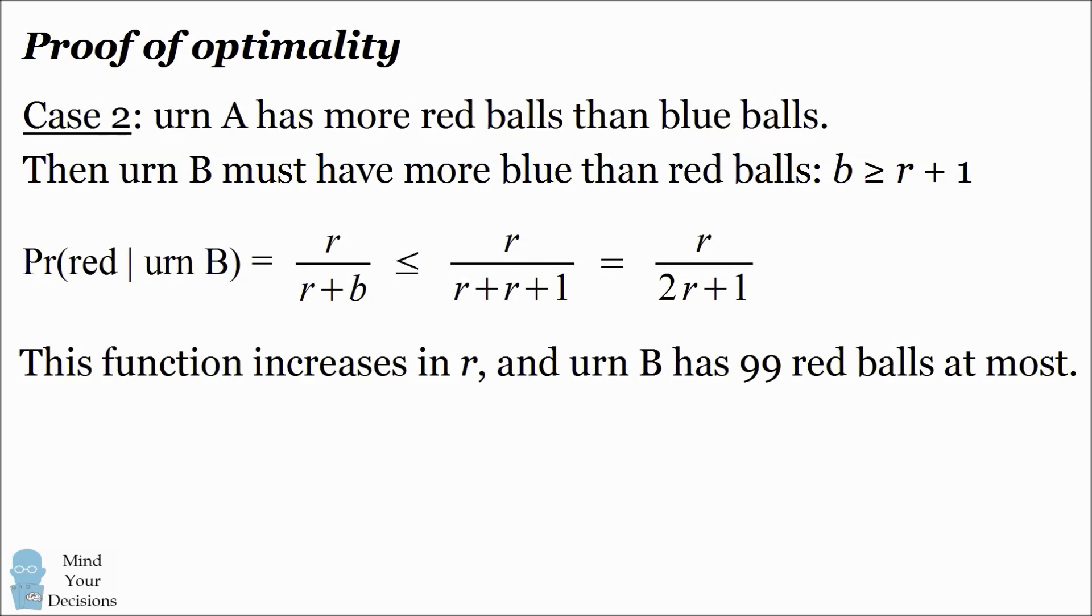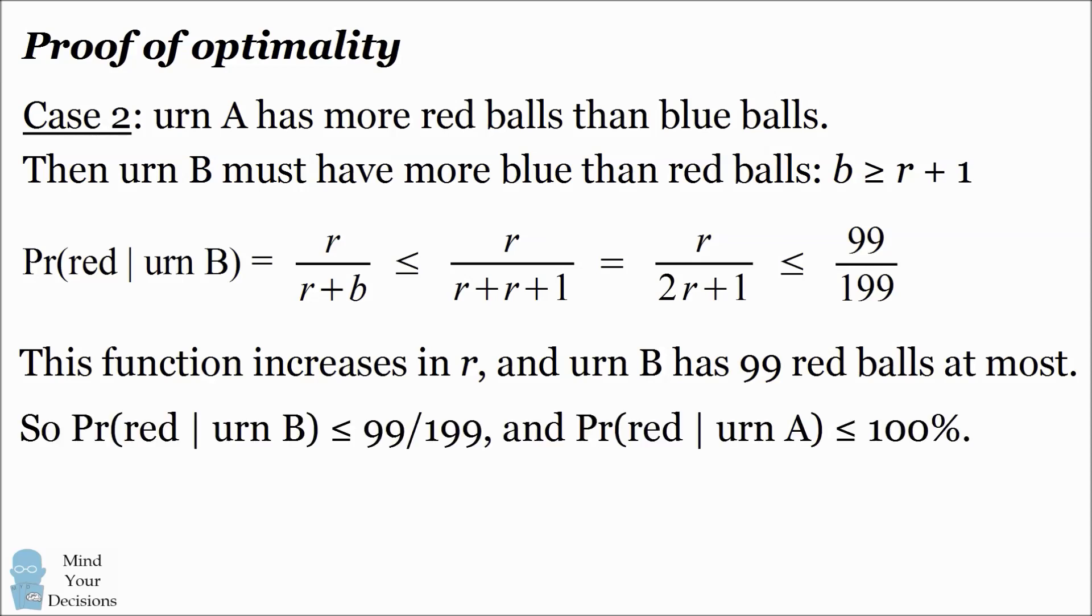At most, urn B has 99 red balls. This is because we need to save one red ball to place in urn A, which has more red balls than blue balls. So at most, this fraction r divided by 2r plus 1 can have a value of 99 divided by 199. This is the value if we substitute r equals 99. So we know the probability of selecting a red ball from urn B is at most 99 divided by 199.